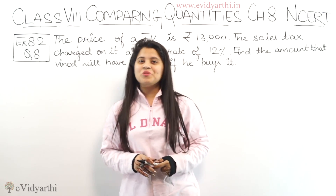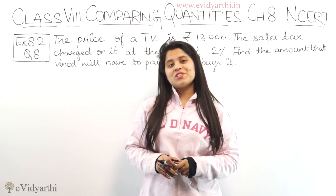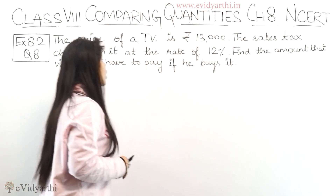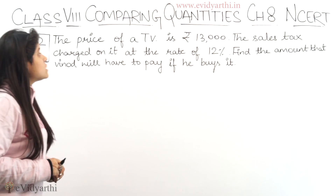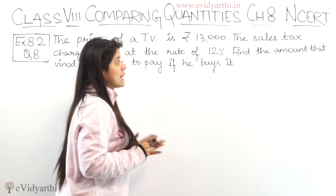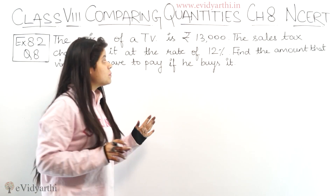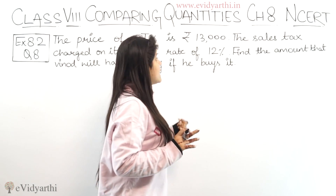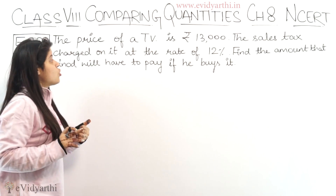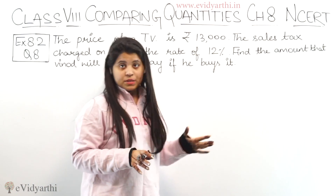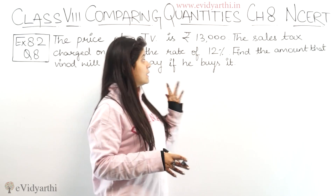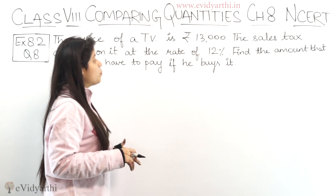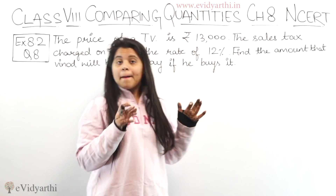Hello everyone, this is Vansi from Evinyati Jots. Coming to question number 8, exercise 8.2. In this question, we have the price of a TV is rupees 13,000. The sales tax charged on it is at the rate of 12%. We have to find the amount that Vinod will have to pay if he buys it.